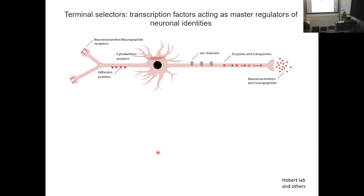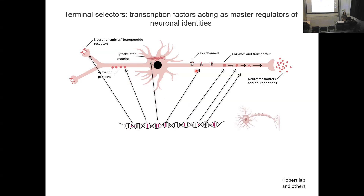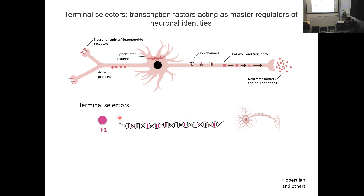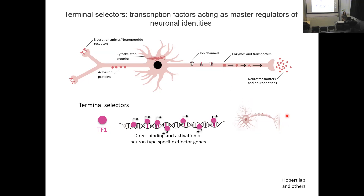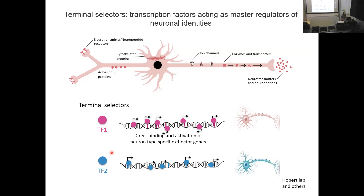Neural differentiation in C. elegans has been extensively studied, mainly in the laboratory of Oliver Hobart and many others. When a neuron needs to differentiate, it needs to express a battery of effector genes — ion channels, neurotransmitter receptors, enzymes for neurotransmitter synthesis. About 15 years ago, Oliver Hobart proposed the concept of terminal selectors: specific transcription factors that in the terminal differentiation step can find these regulatory regions and in a coordinated and direct manner activate the expression of the effector genes characterizing that neuron type.